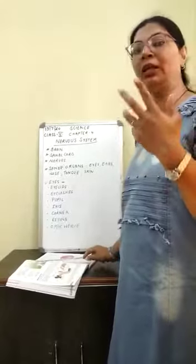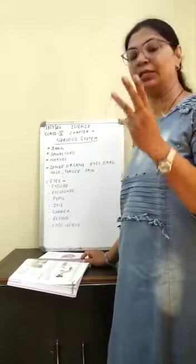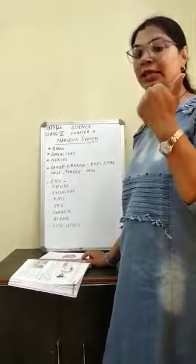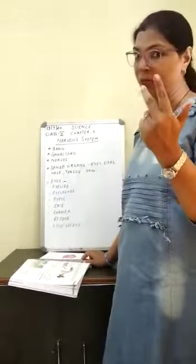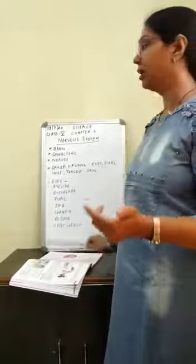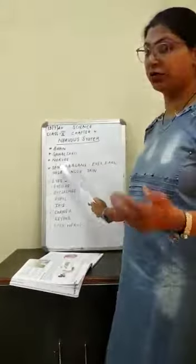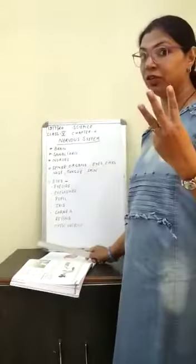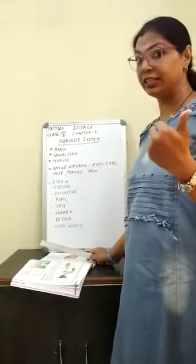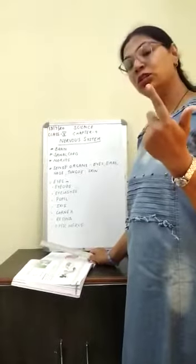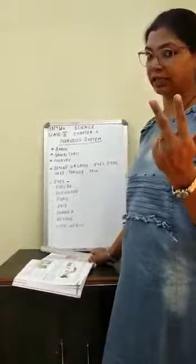We know that the brain has three parts: cerebrum, cerebellum, and medulla. Then the spinal cord, and then nerves — three types of nerves: sensory nerves, motor nerves, and mixed nerves.